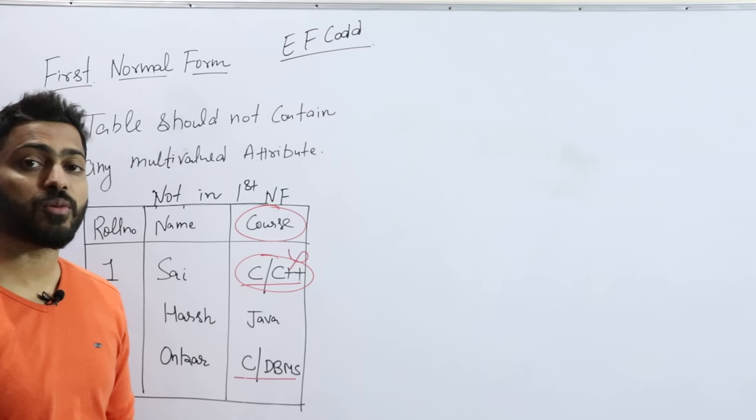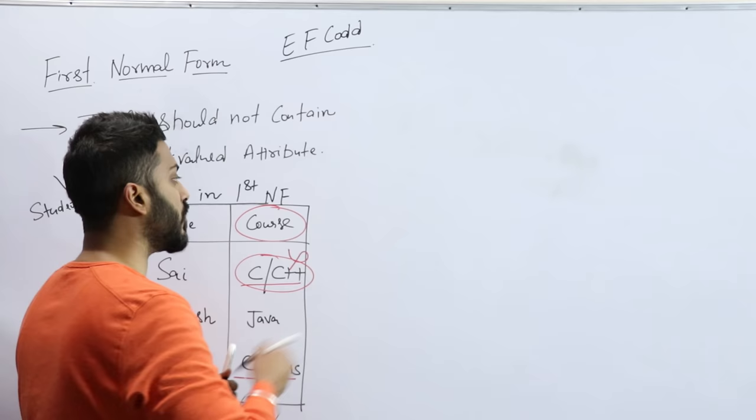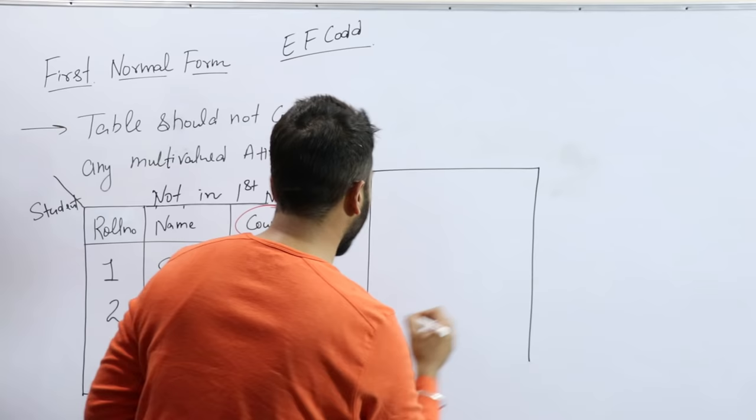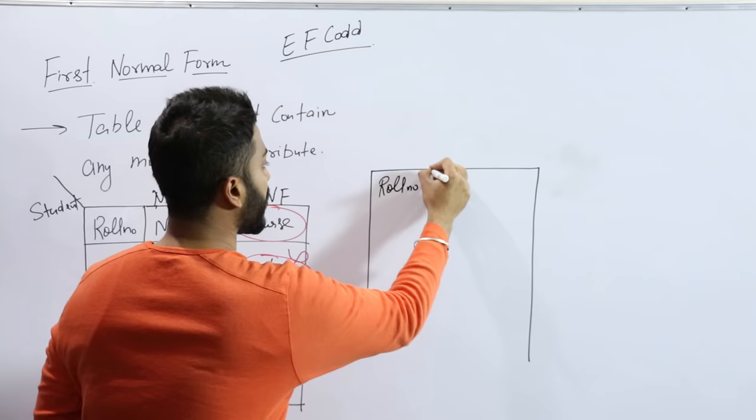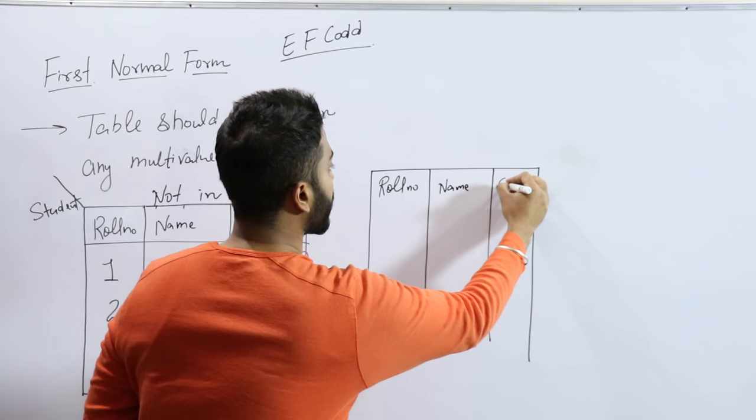For this, we have three solutions. One by one we will check all the solutions. The first solution is to draw the table or create the table like this: role number, name, and course attribute - the same three attributes I have taken here.